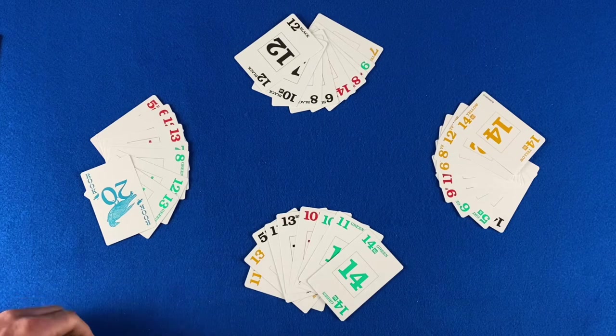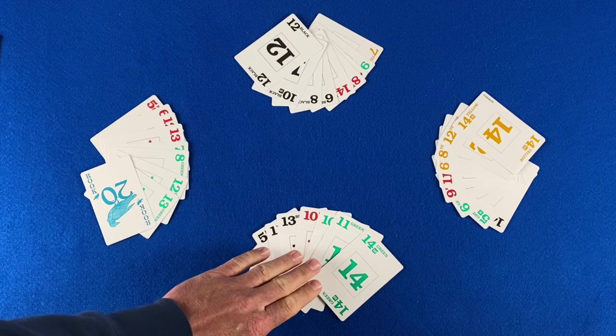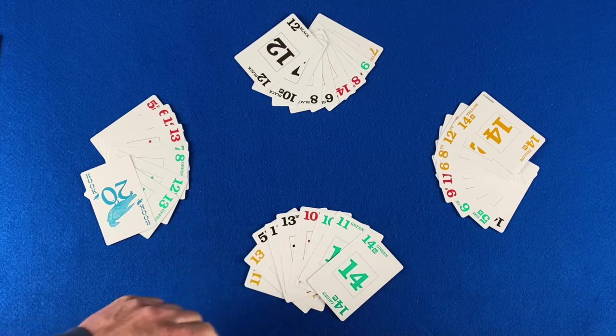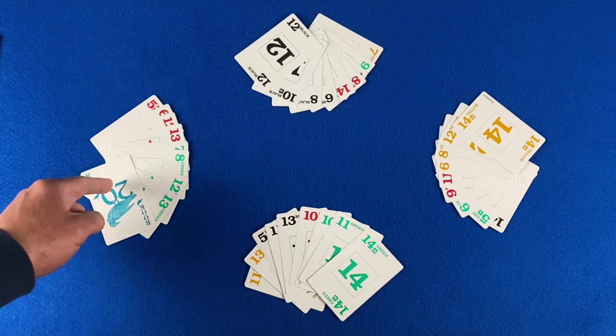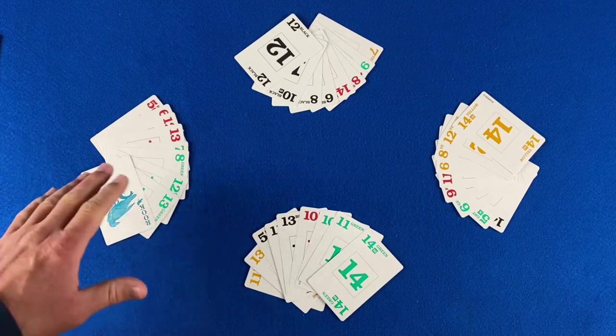The player left of the dealer leads the first trick. For this example, the player at the bottom of the screen dealt first, so the player to their left leads. That just happened to be the same player that won the bid. It does not always work out that way.